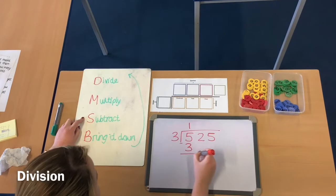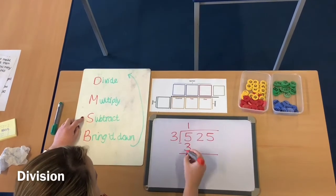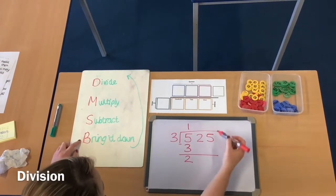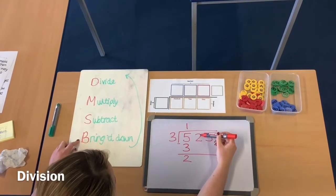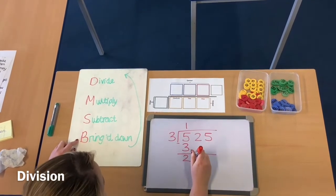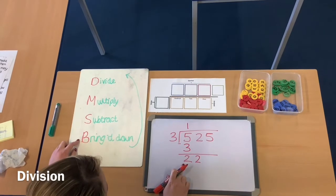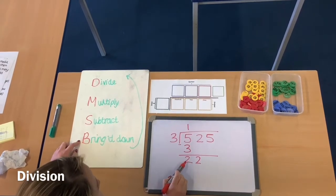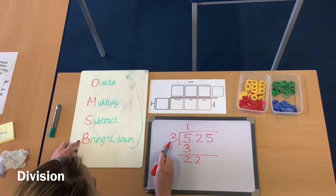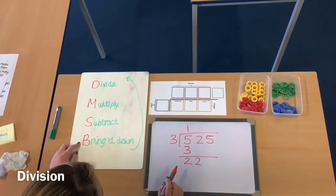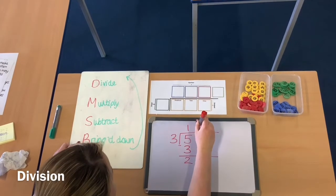Subtract. 5 take away 3 is 2. And then I bring it down. So I bring down the next number. So I've got a 2 there. So I bring the 2 down. So now I've got 22. So now I'm going to do 22 divided by 3. So I'm going to think how many times does 3 go into 22? And that will be 7.